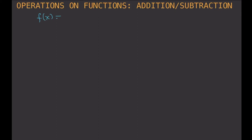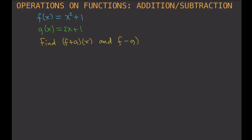Our first function is f(x) = x² + 1, and our second function is g(x) = 2x + 1. The question is: find f plus g of x, and f minus g of x.